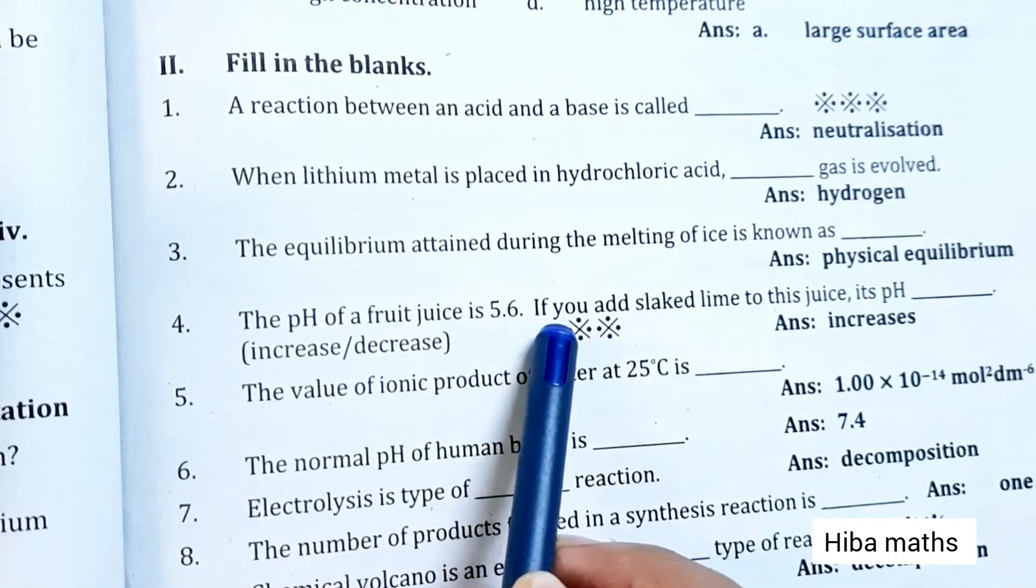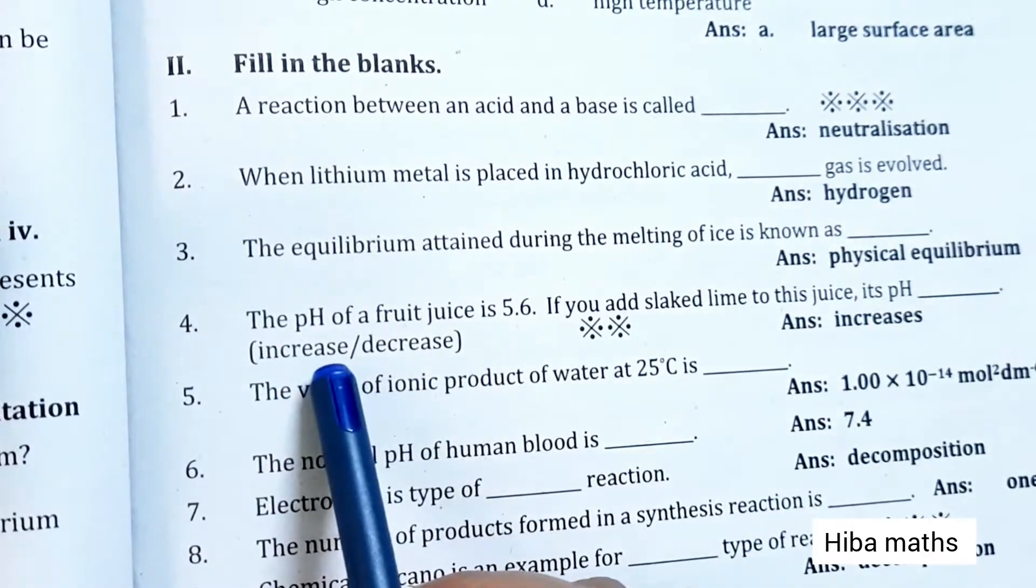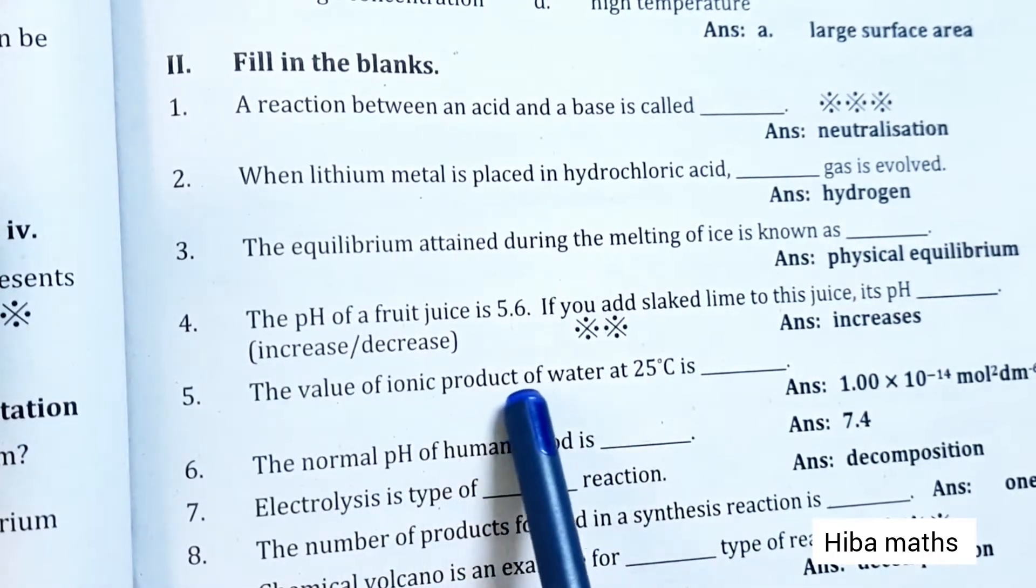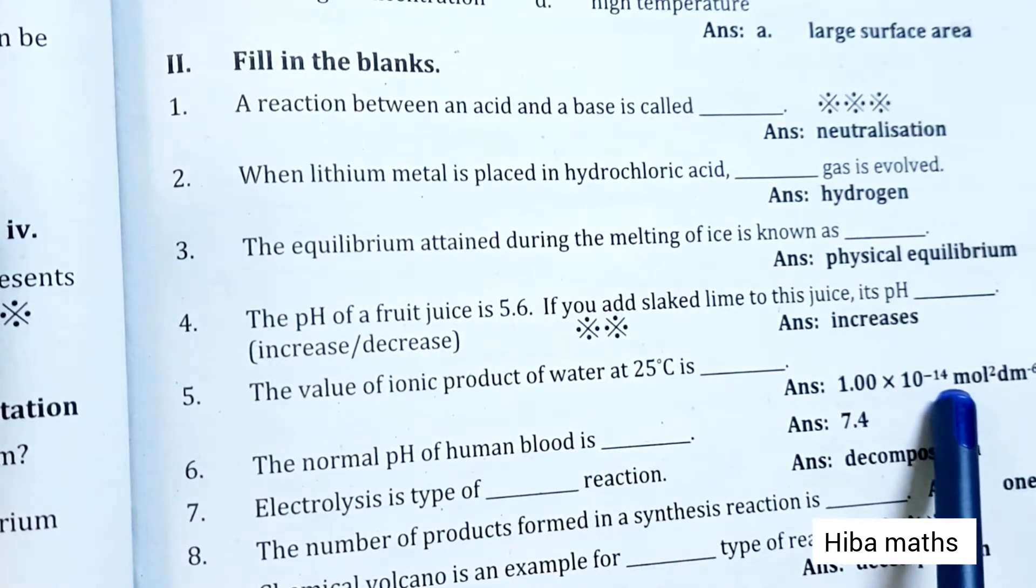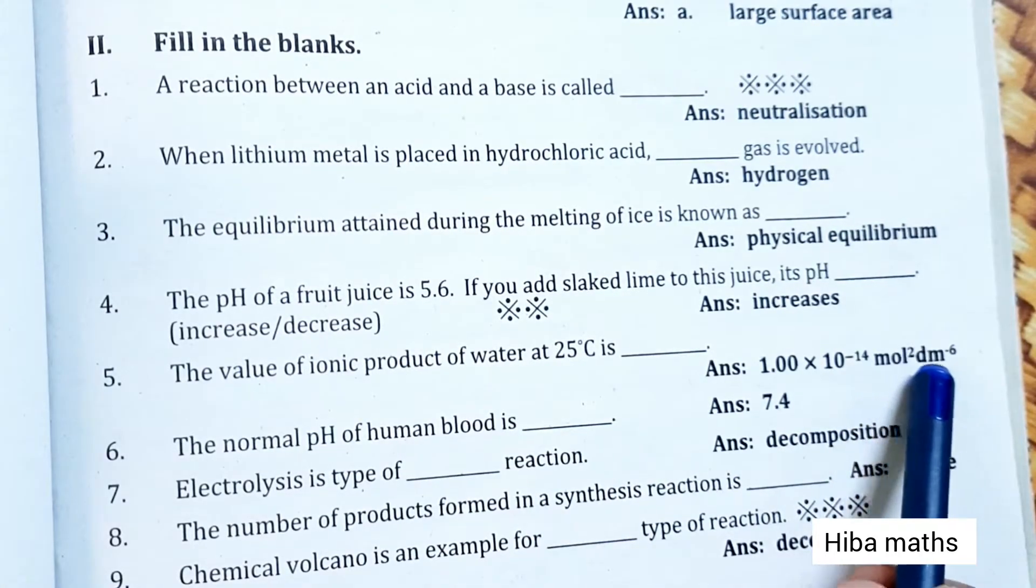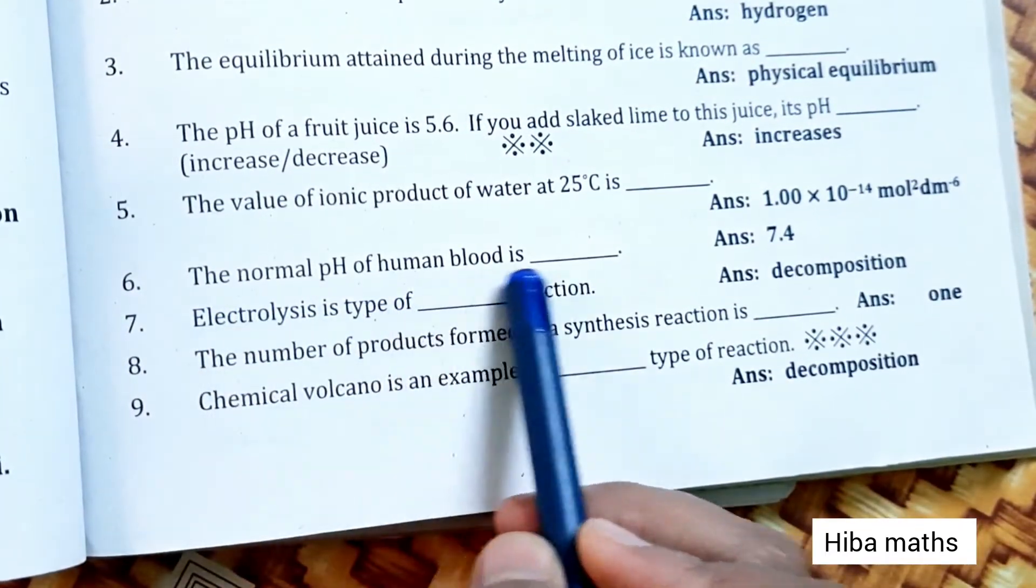The pH of fruit juice is 5.6. If you add slaked lime to this juice, its pH increases. The value of ionic product of water at 25 degrees Celsius is 1 into 10 power minus 14 mole square per dm minus 6.